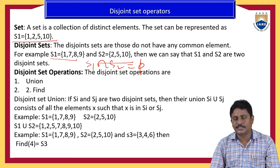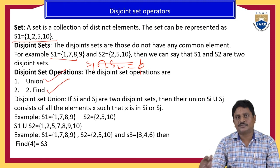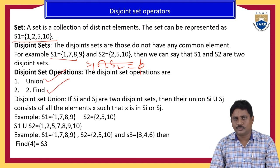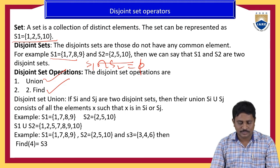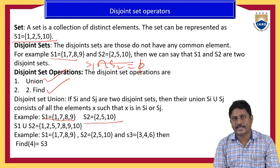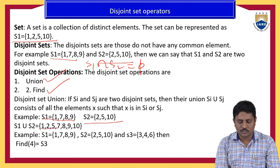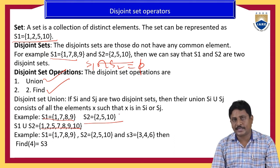Disjoint set operations in the analysis of algorithms have two different types of operations: one is union and another one is find. Union is used to combine two or more sets. Find is used to search for an element in the given subset. For example, S1 equals one, seven, eight, nine and S2 equals five, ten. S1 union S2 gives one, two, five, seven, eight, nine, ten.